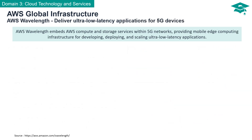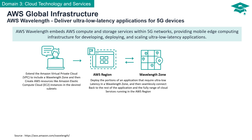AWS Wavelength embeds AWS Compute and Storage services within 5G networks, providing mobile edge computing infrastructure for developing, deploying, and scaling ultra-low latency applications. You can extend your Amazon Virtual Private Cloud to include a Wavelength Zone — a realm designed to eliminate latency. Here, you can create AWS resources such as Amazon EC2 instances within the desired subnets, a seamless expansion designed for minimal latency and maximal performance.